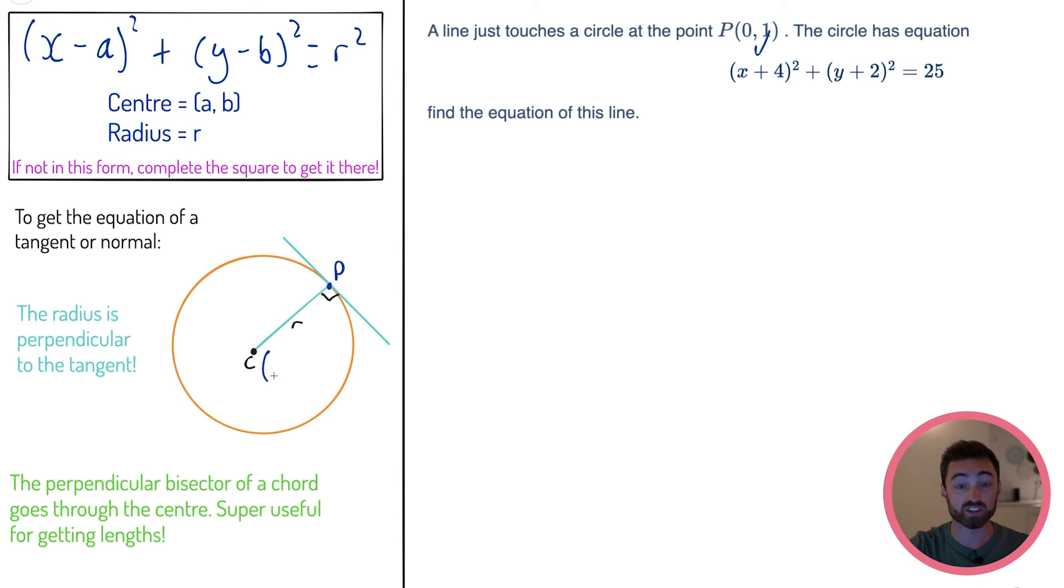In this case, the coordinates of the center of the circle would be (-4, -2). The coordinates of P are (0, 1). So we would say, I could get the gradient of this line - in other words, the radius - by doing change in y over change in x. So the gradient of the radius would be (1 - (-2)) / (0 - (-4)). That's 3/4.